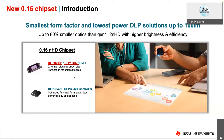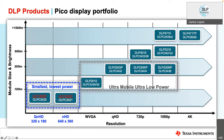Looking at how this fits into the DLP Pico chipset portfolio today: the existing portfolio has an ultra-mobile, ultra-low power segment of 0.2-inch diagonal chipsets ranging from wide VGA to 1080p. The new 0.16 chipset creates a new category called the smallest and lowest power chipsets. The QNHD has a max input resolution of 320 by 180, and the NHD has a resolution of 640 by 360 and can go up to 360 Hz frame rate on a parallel interface.